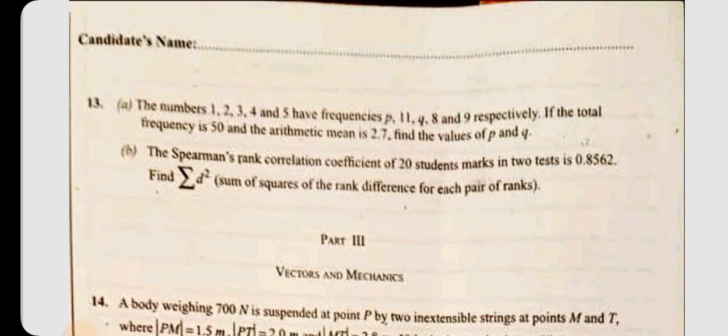B, the Spearman's rank correlation coefficient of 20 students' marks in two tests is 0.8562. Find sigma d squared, sum of squares of the rank difference for each pair of ranks.